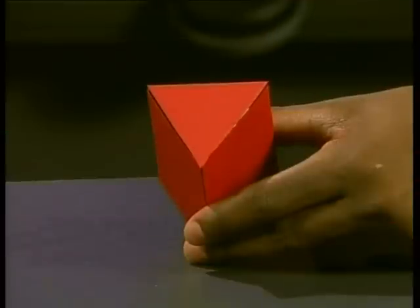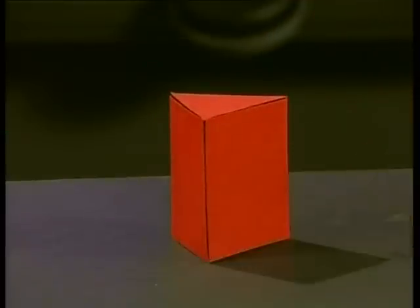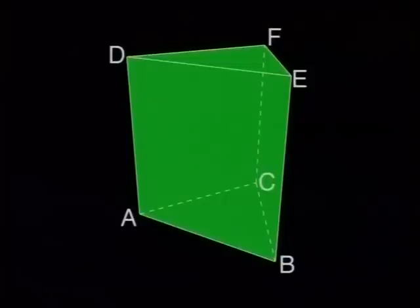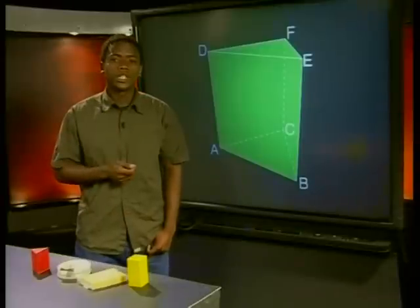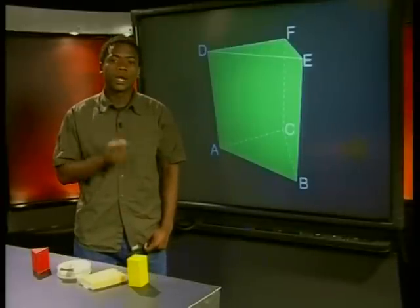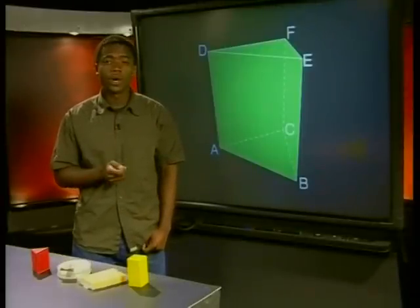This is called a right triangular prism. Here we have a diagram of the wooden model of the right triangular prism. Let's see if we can use what we know about the formula for the volume of a right rectangular prism to find the formula for the volume of a right triangular prism. What do you think would change about the formula now that we have a triangular prism rather than a rectangular one?